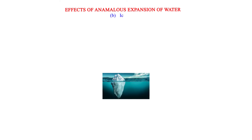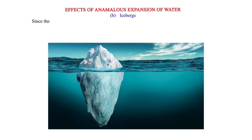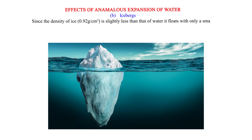Effects of Anomalous Expansion of Water. b. Icebergs: Since the density of ice, 0.92 grams per cubic centimeter, is slightly less than that of water, it floats with only a small portion above the water surface. The rest and bigger portion rests underwater.